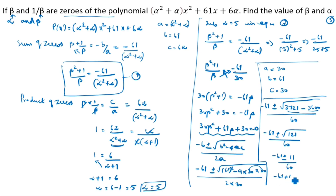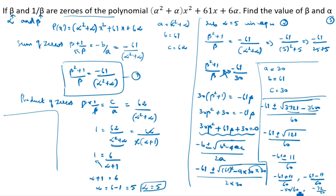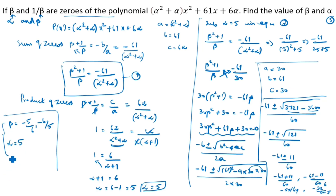So beta equals (minus 61 plus 11) by 60 or (minus 61 minus 11) by 60, which gives minus 50 by 60 or minus 72 by 60. Simplifying: beta equals minus 5 by 6 or minus 6 by 5. And alpha is equal to 5. Thanks for watching this video.